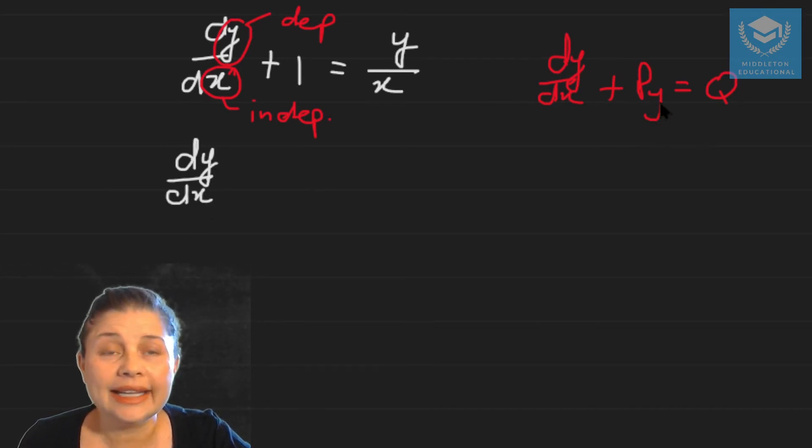dy/dx. The next term you need to have is where the dependent is linear. So it means you want the term where y is to the power of one. So in this case it's going to be the y over x and the q on the other side of the equation in this case is going to be minus one.